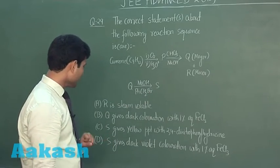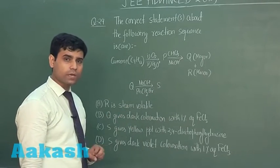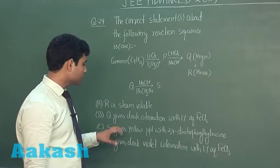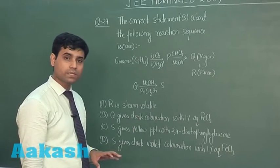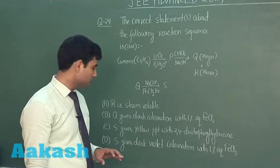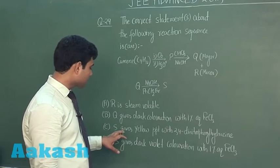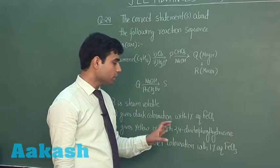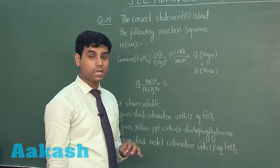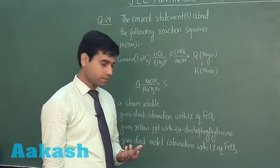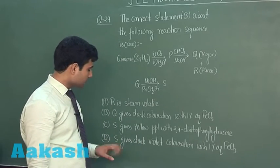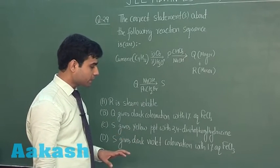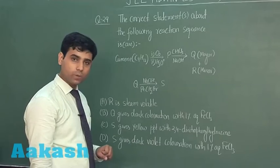Option A is R is steam volatile. Option B says Q gives dark coloration with 1% aqueous FeCl3. Option C says S gives yellow precipitate with 2,4-dinitrophenylhydrazine, which is our 2,4-DNP reagent. Option D says S gives dark violet coloration with 1% aqueous FeCl3.